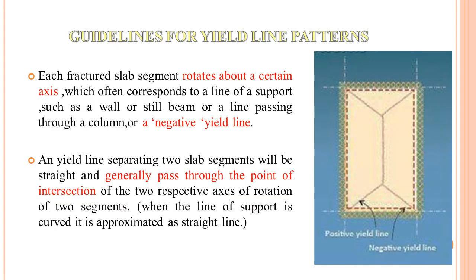The guidelines for drawing E-Line patterns begin with the first guideline: fractured segments rotate about a certain axis, often referred to as the line of support. This line of support may be a beam on which the slab rests, or a wall, or in the case of a flat slab without beams, the line passing through the columns is considered the axis of rotation.